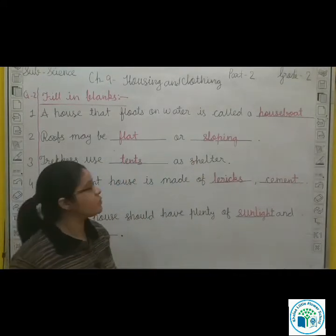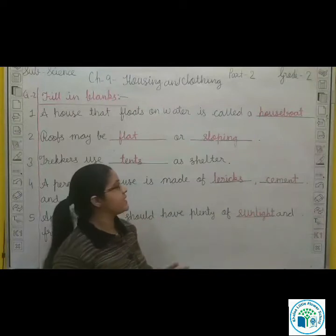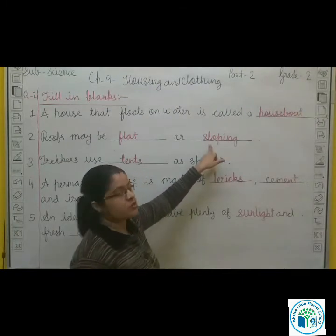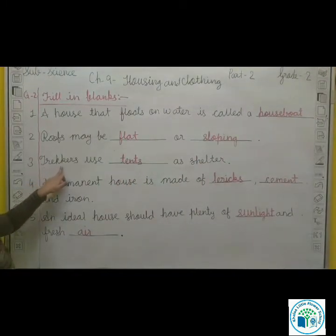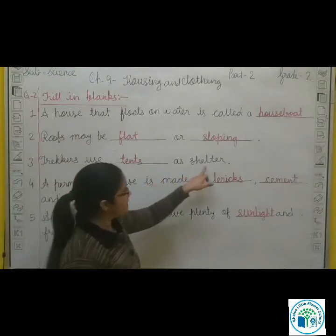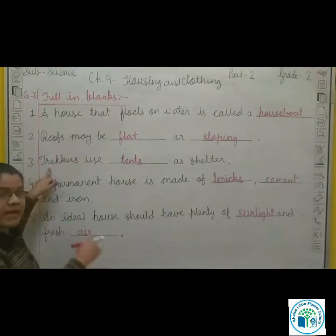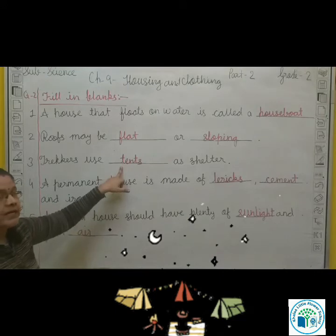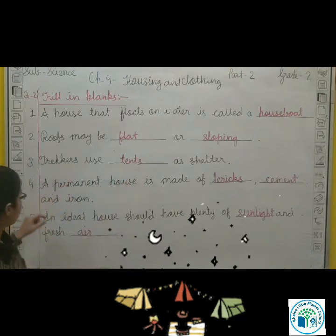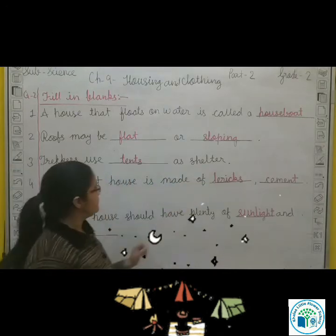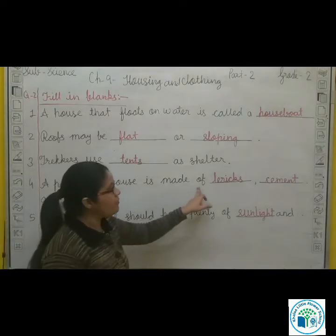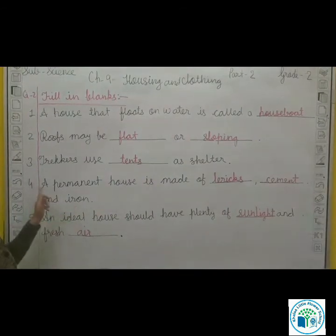Flat roofs are for dry areas and plains. Sloping roofs are used in hilly areas. Trekkers are those who travel long distances. They use tents as shelters. Trekkers use tents as shelters.